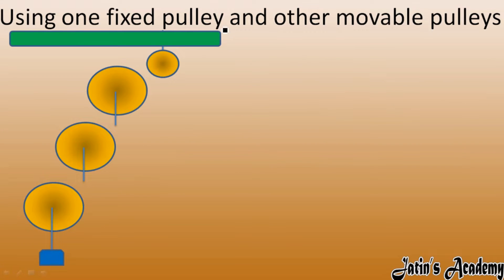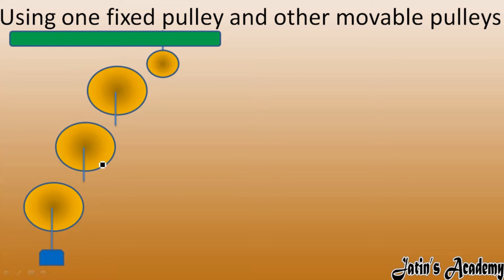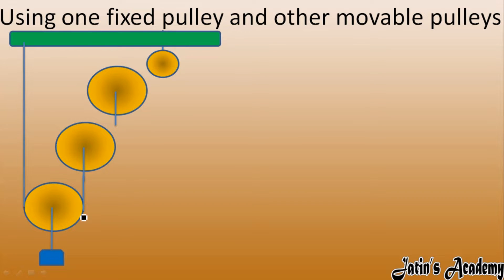We are using one fixed pulley and three movable pulleys. The fixed pulley has a mechanical advantage of one. We will now attach the strings — first string attached to the support, then connected to each movable pulley in sequence, and another string goes from the support to the next pulley, and so on. This last string changes the direction of the effort.